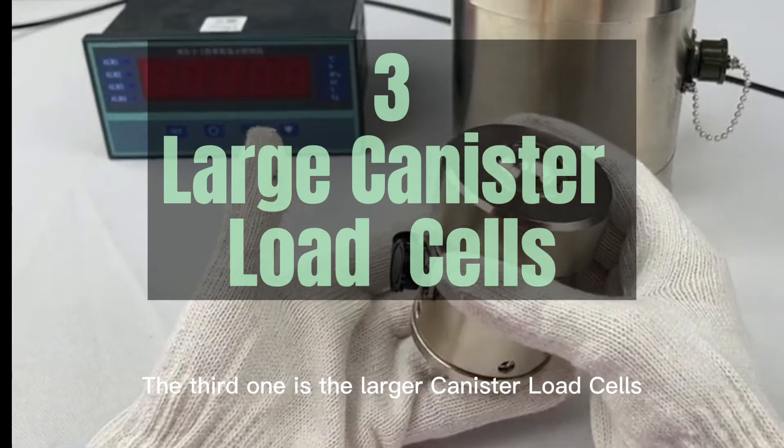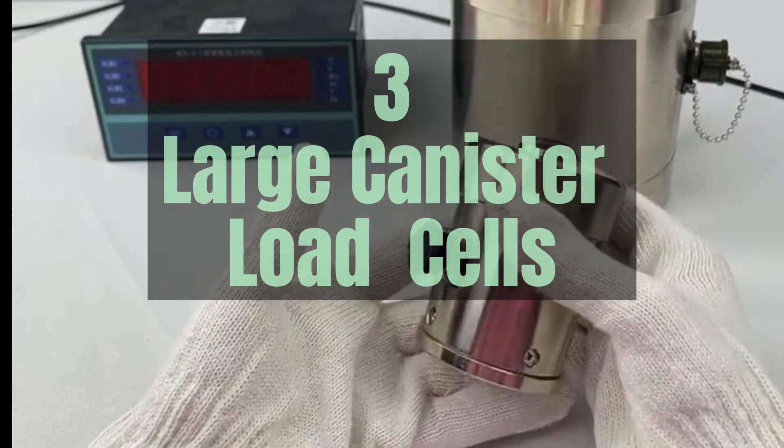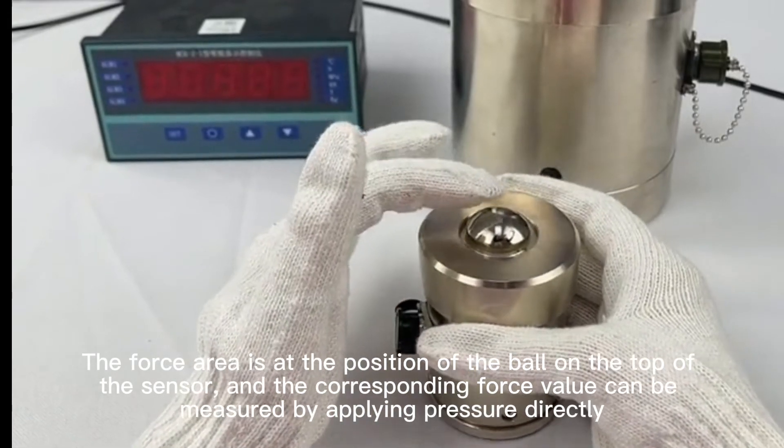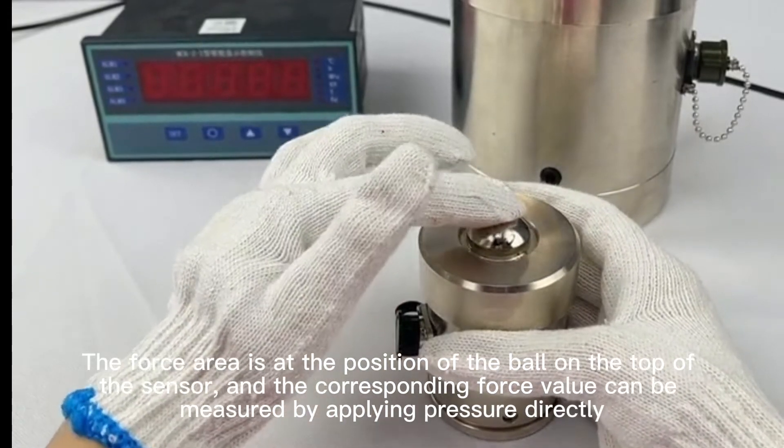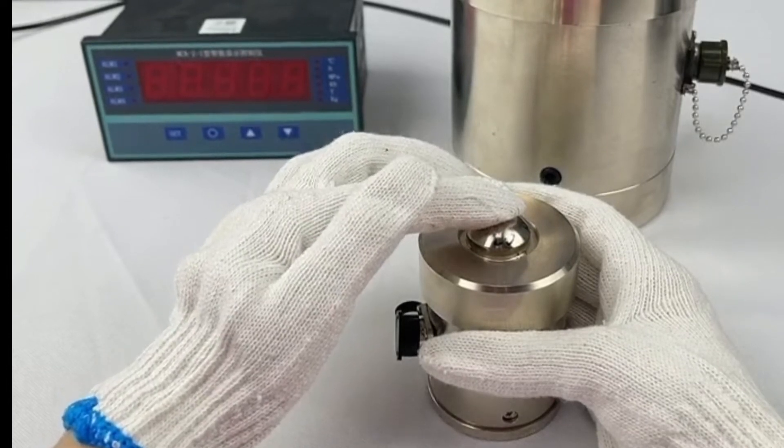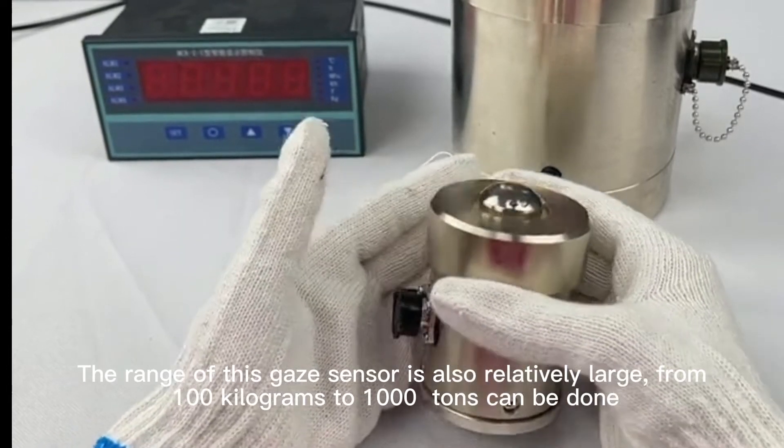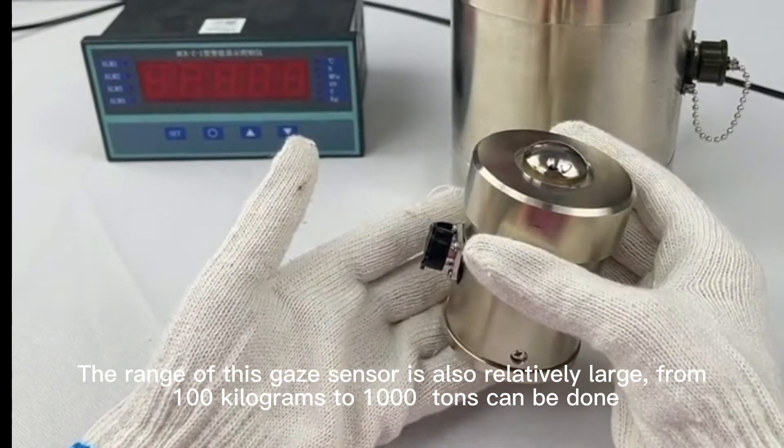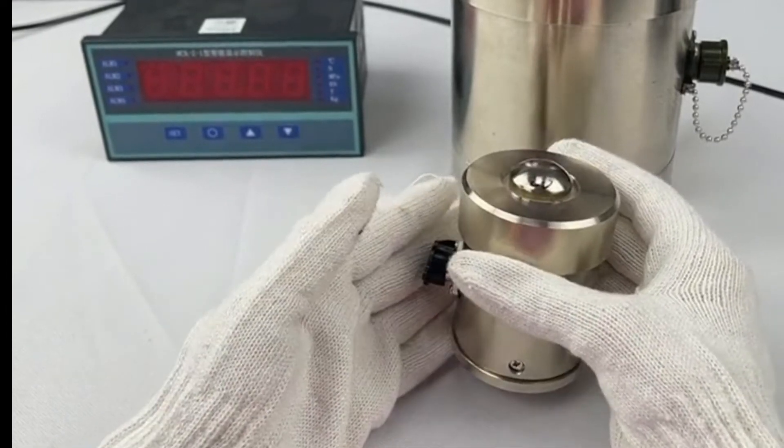The third one is the larger canister load cells. The force area is at the position of the ball on the top of the sensor, and the corresponding force value can be measured by applying pressure directly. The range of this sensor is also relatively large, from 100 kg to 1000 tons can be done.